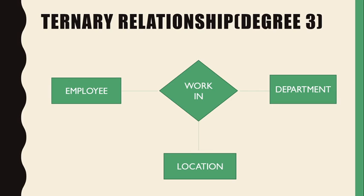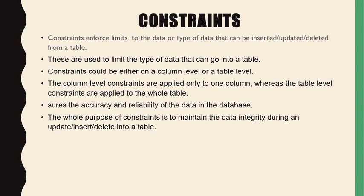These are the degree relationships. Now we discuss constraints. Constraints are limitations about what types of data we insert into a table. Constraints enforce limits on the data that can be inserted, updated, or deleted from a table, limiting the types of data that go into the table. Constraints can be at the column level or table level. Column level constraints apply to one column, while table level constraints apply to the whole table. The purpose of constraints is to maintain data accuracy, reliability, and integrity during insertions, updates, and deletions.